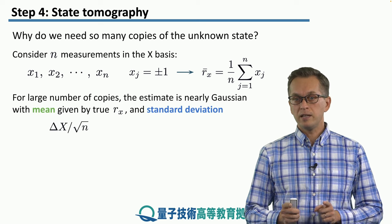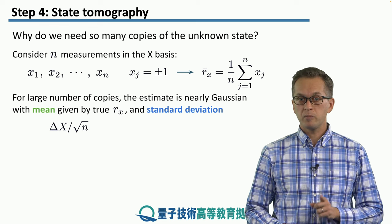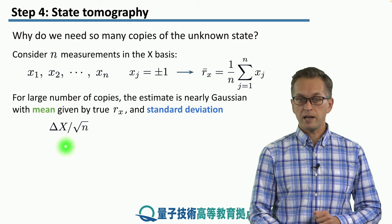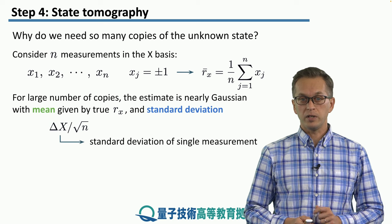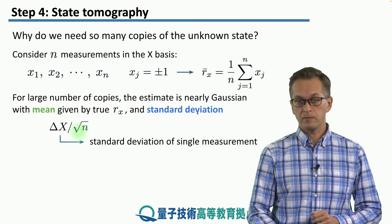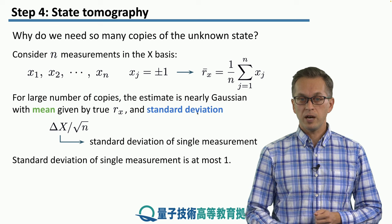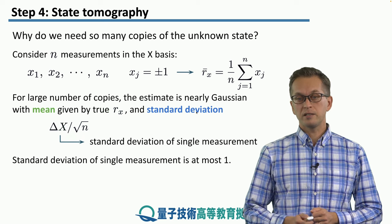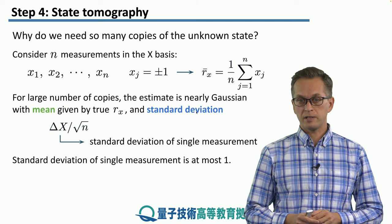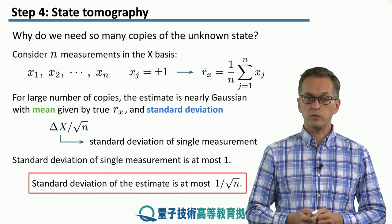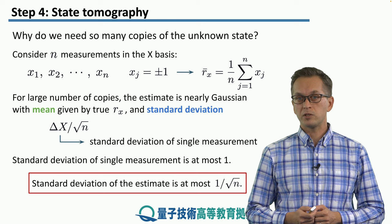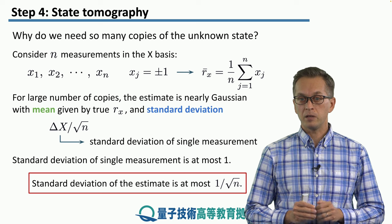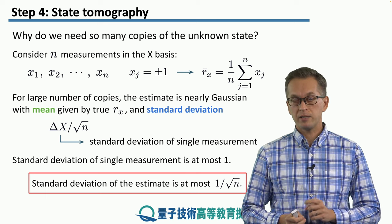Now, the larger the number of copies is, then this estimate becomes a Gaussian variable with mean that's given by the true rₓ, the true x component of the Bloch vector. And the standard deviation will be given by this following expression: the standard deviation of a single measurement of the X variable in the X basis, divided by square root of n. So we see that the larger copies that we have, this overall standard deviation is going to decrease as square root of n. And also we can just forget about this δx, the standard deviation for a single measurement, we can just assume the worst case scenario where it's equal to one. So then the standard deviation of the estimate that we obtain after measuring n times is given by one over square root of n. And this shows you that the more you measure in a given basis, the better estimate you get, the higher confidence you have that your estimate is actually close to the real value.